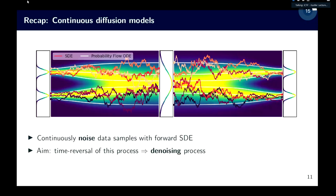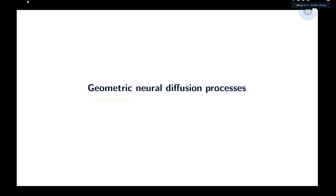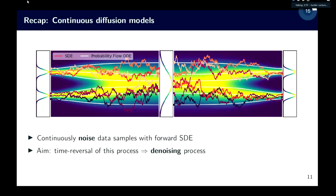To recap continuous diffusion models: the idea is two things — first, construct a noising process formalized as an SDE to continually destroy the data samples; second, approximate the time reversal process. Diffusion models build on this and have been shown to work extremely well.